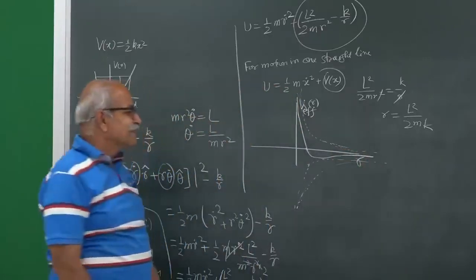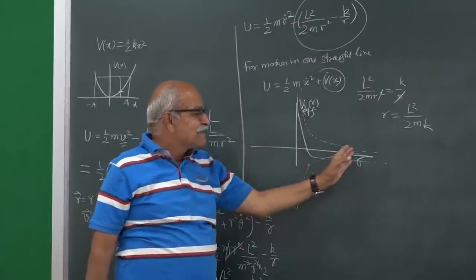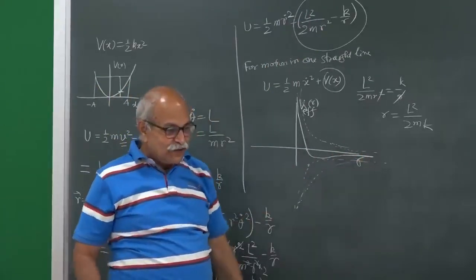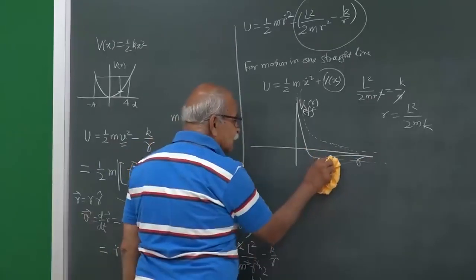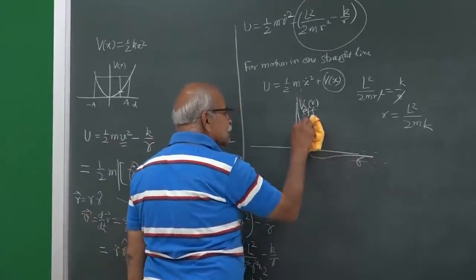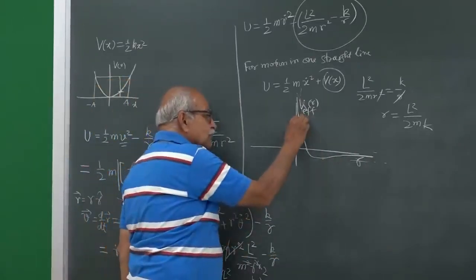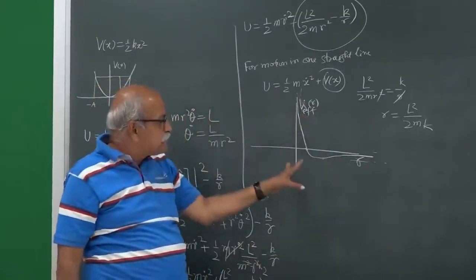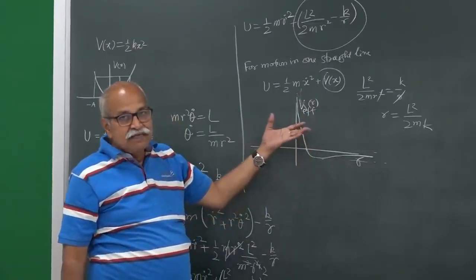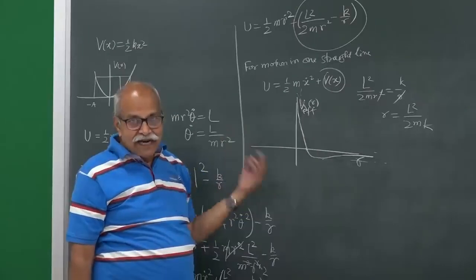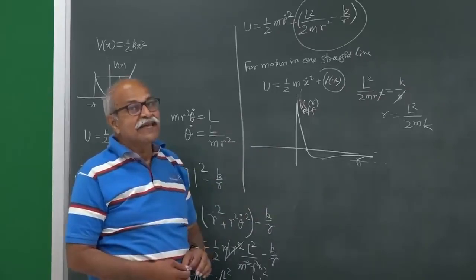So the shape of V_eff as a function of r: it starts very large and positive for small r, comes down, crosses zero, reaches a minimum (negative), and then rises back toward zero from below as r → ∞. From this effective potential diagram we can derive detailed information about the inverse square attractive central force motion, which we will do next time.